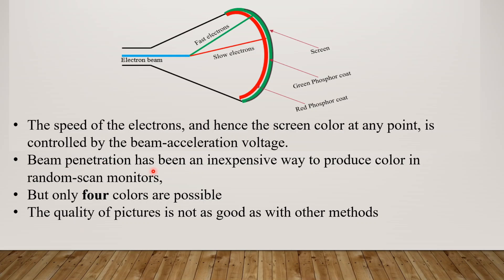The beam penetration method is relatively inexpensive because it uses only extra phosphor layers. However, it is considered a disadvantage that we can only produce 4 colors using this method.